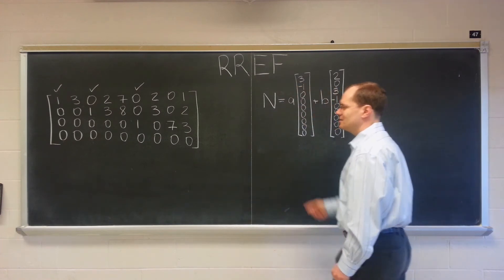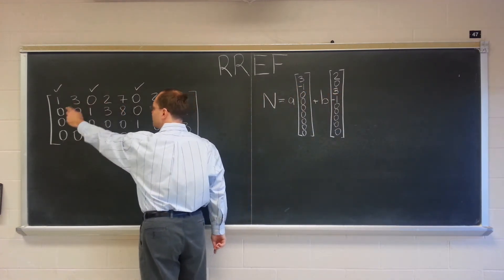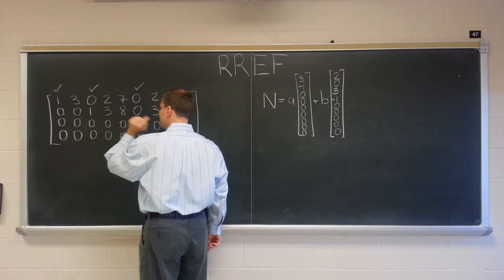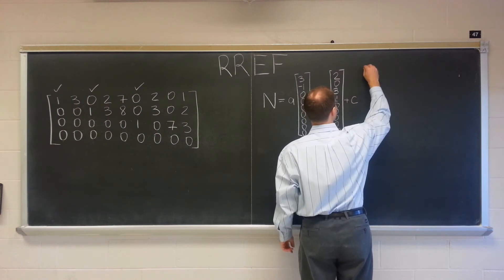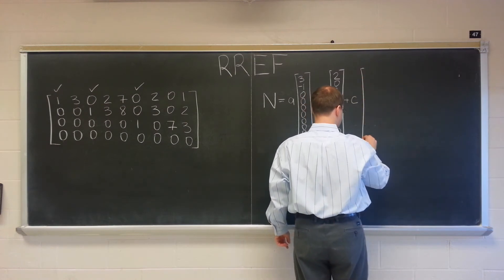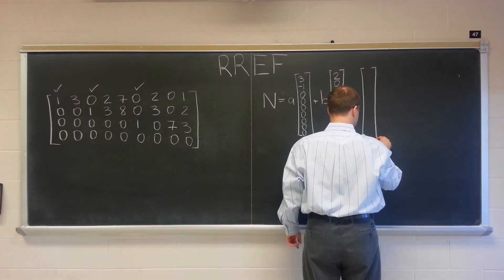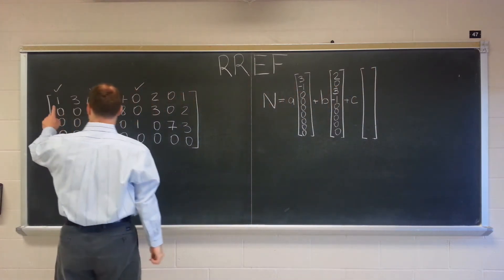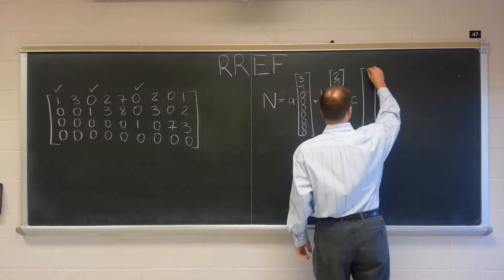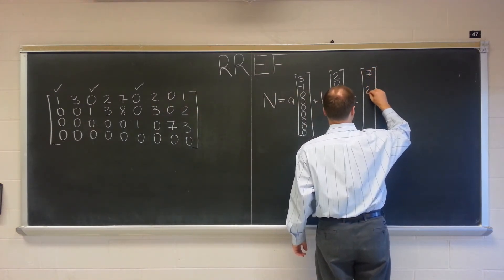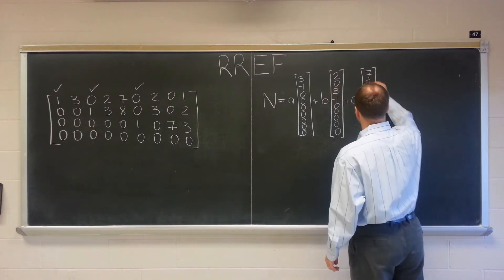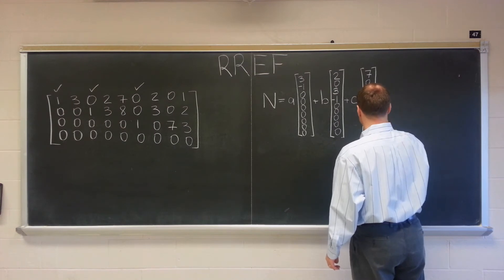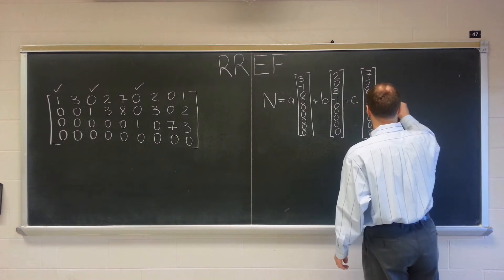The third element: seven times the first, eight times the third, and minus one times the fifth, times constant C — giving the vector (7, 0, 8, 0, -1, 0, 0, 0, 0).